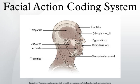The Facial Action Coding System is a system to taxonomize human facial movements by their appearance on the face, based on a system originally developed by a Swedish anatomist named Karl Hermann Hjortsjö. It was later adopted by Paul Ekman and Wallace V. Friesen, and published in 1978.